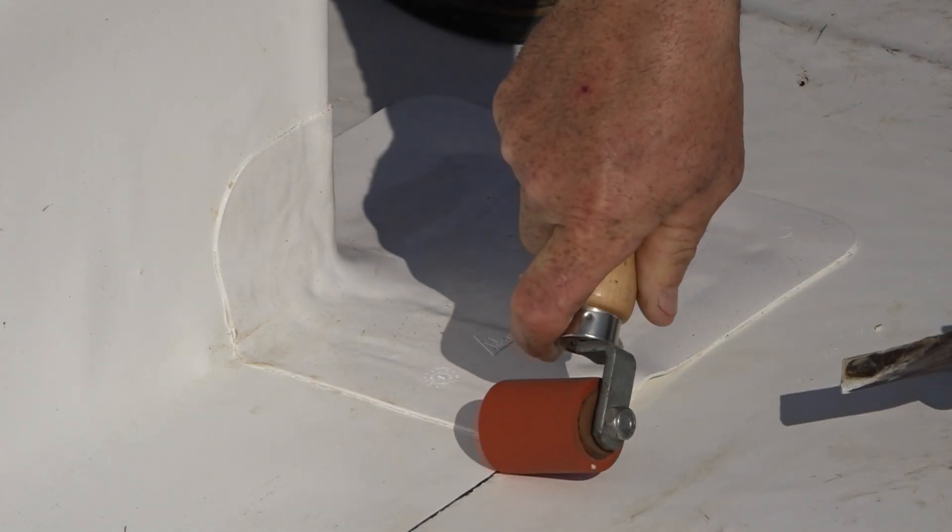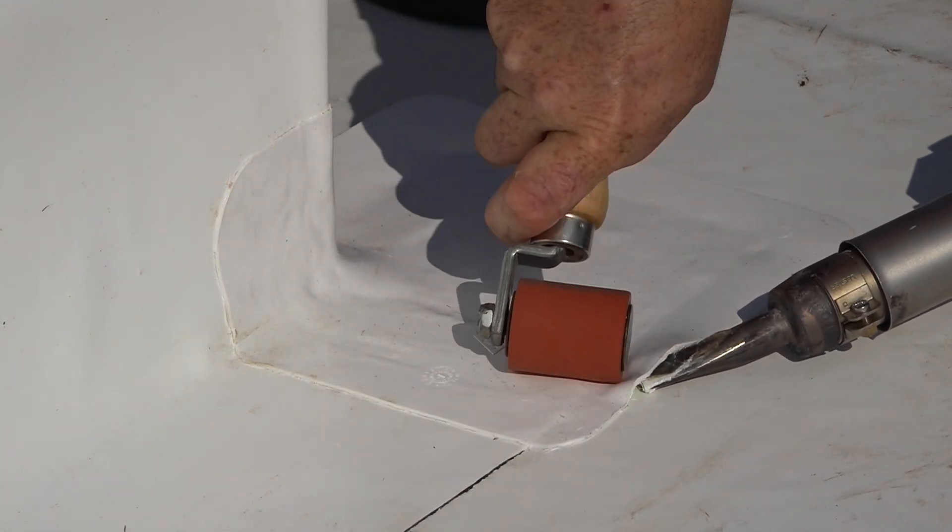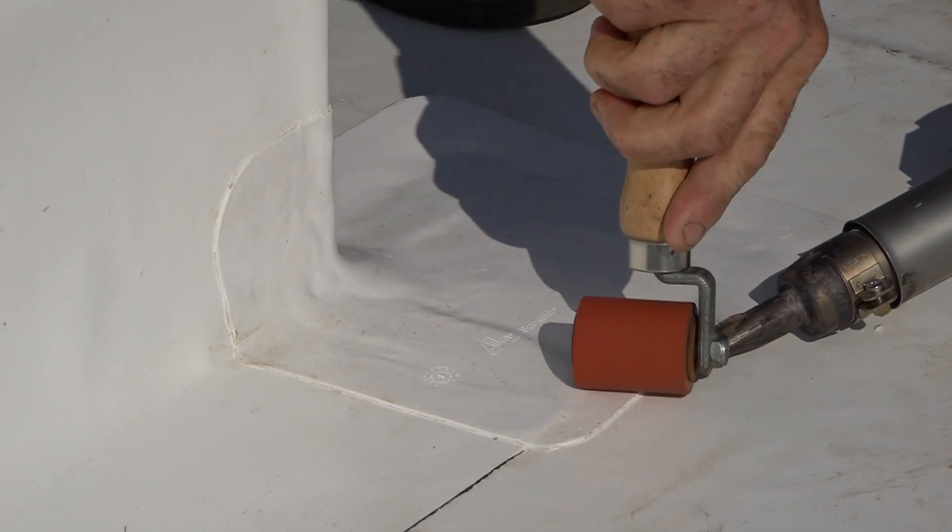And then you see when he goes up to that intersection on your curb flashing, and now he turns his roller around and gets that sharp edge right into that seam.